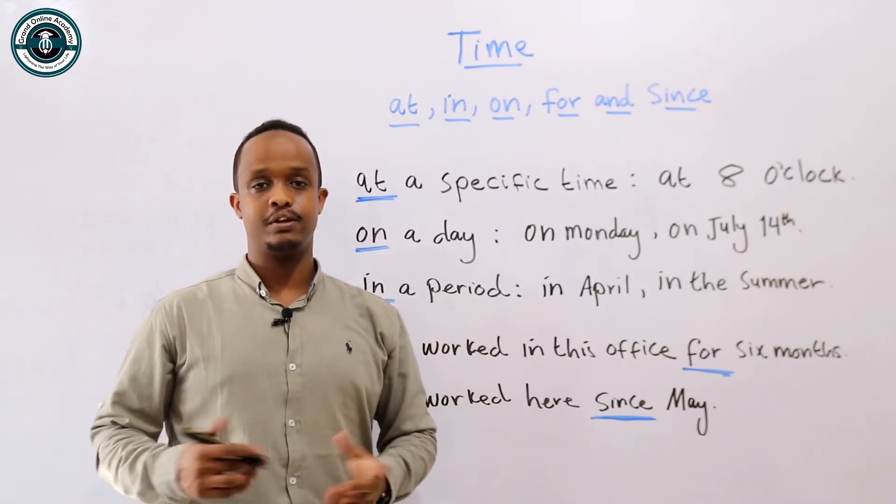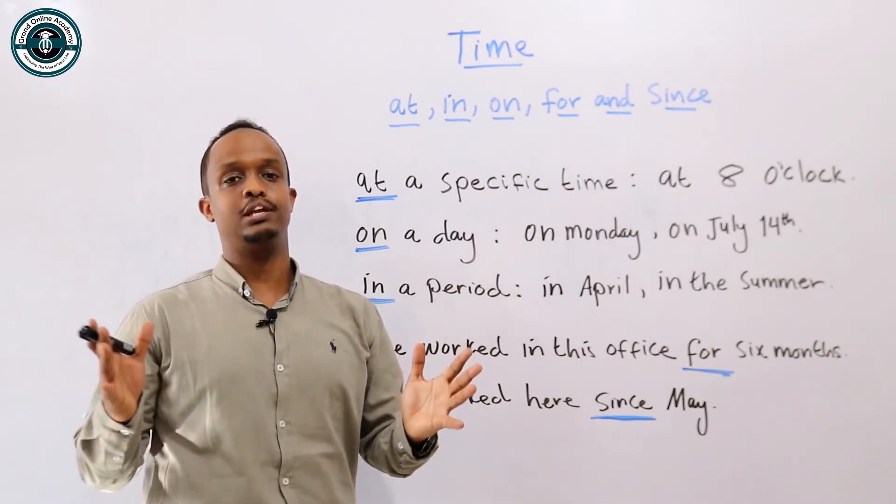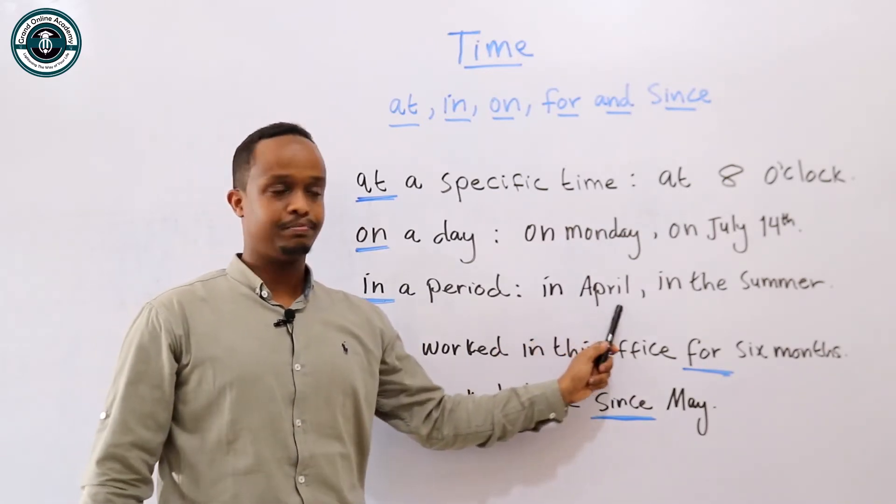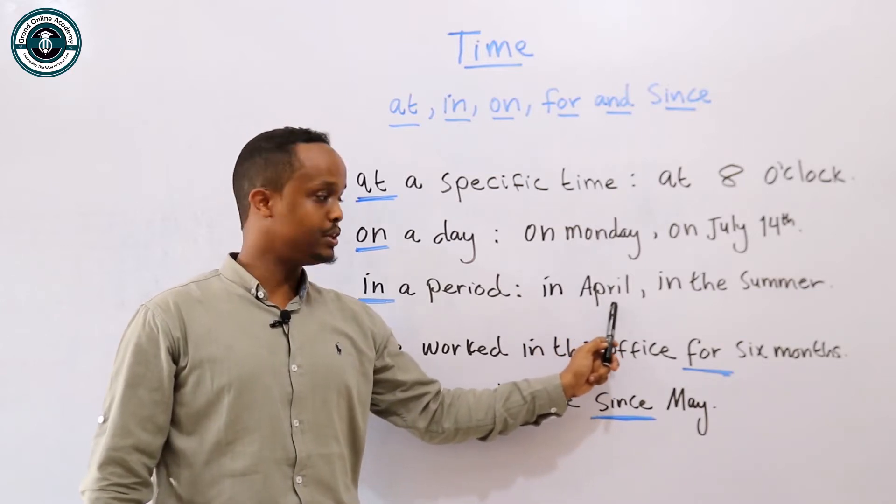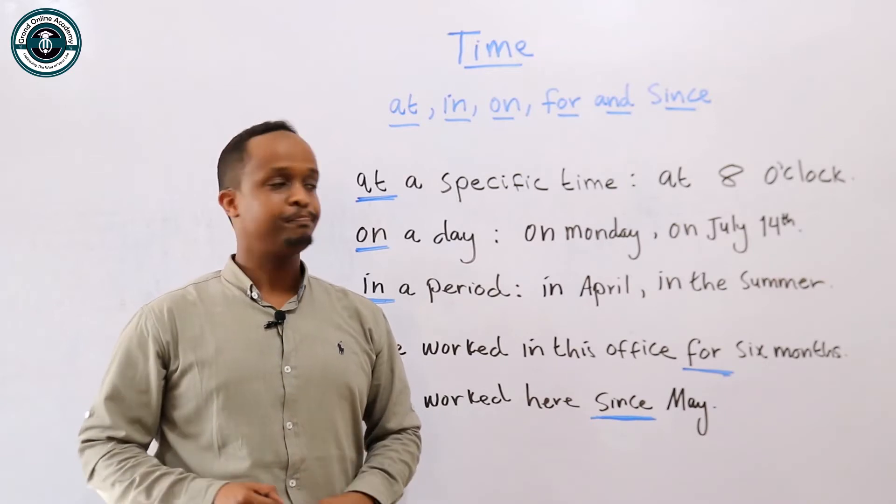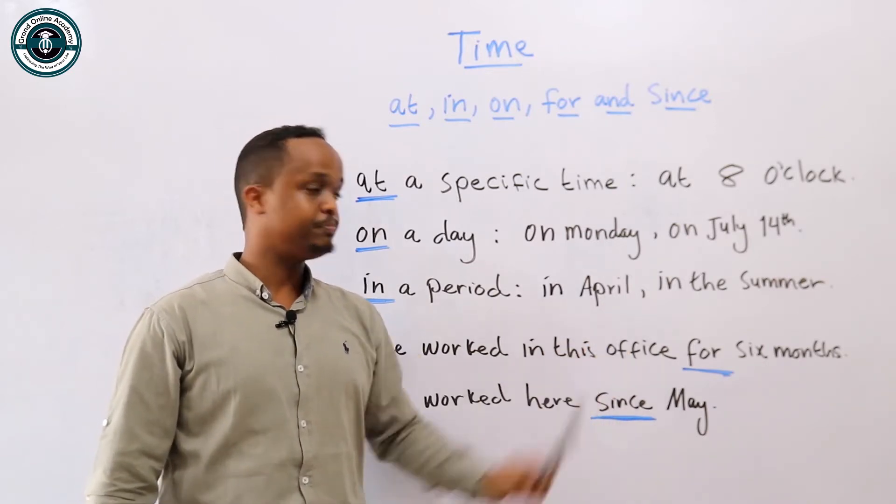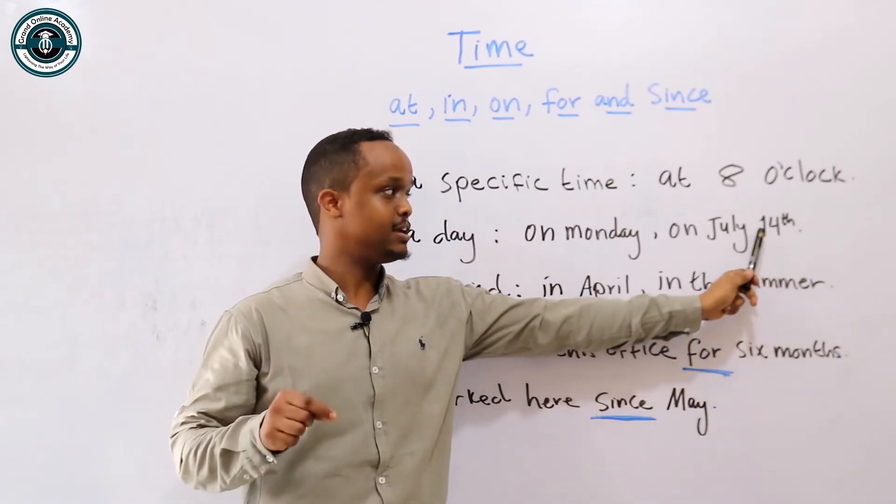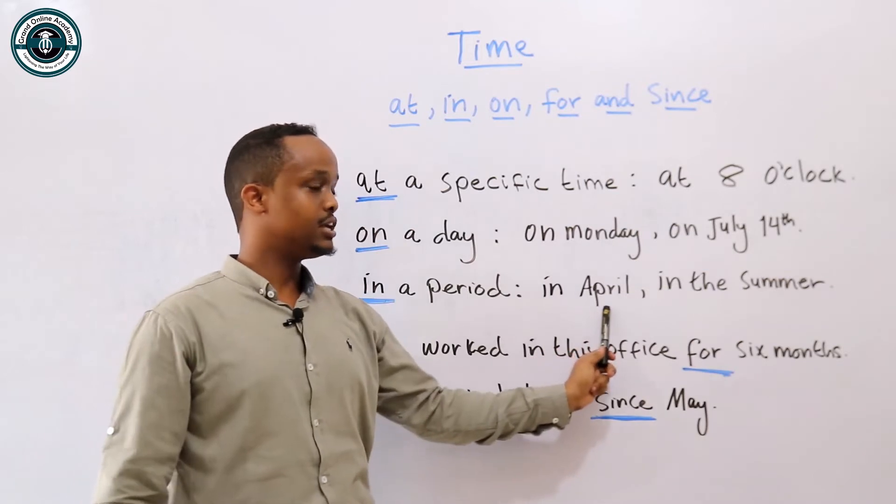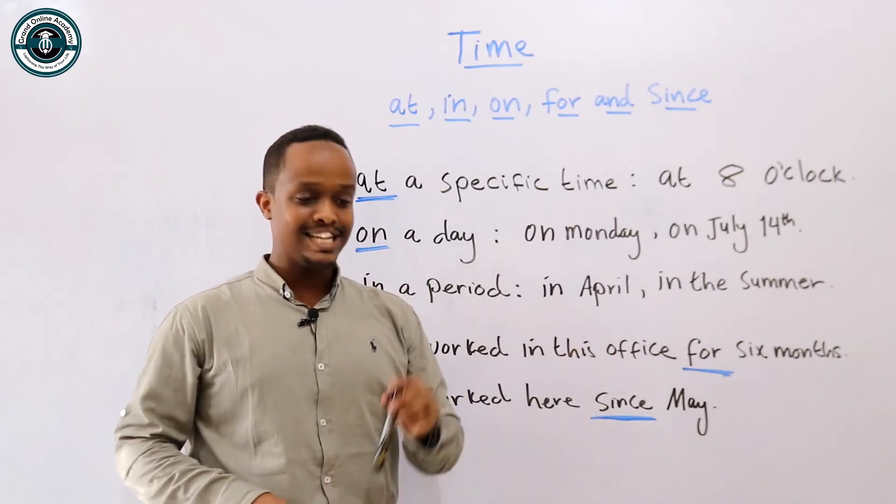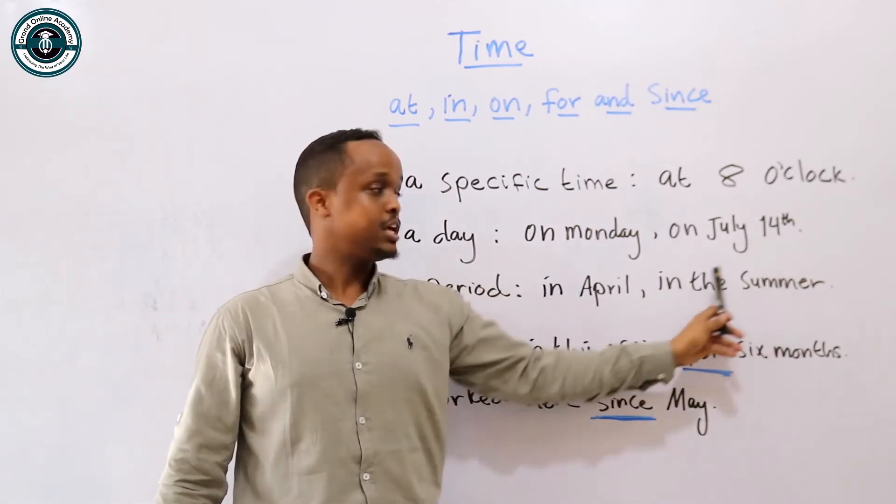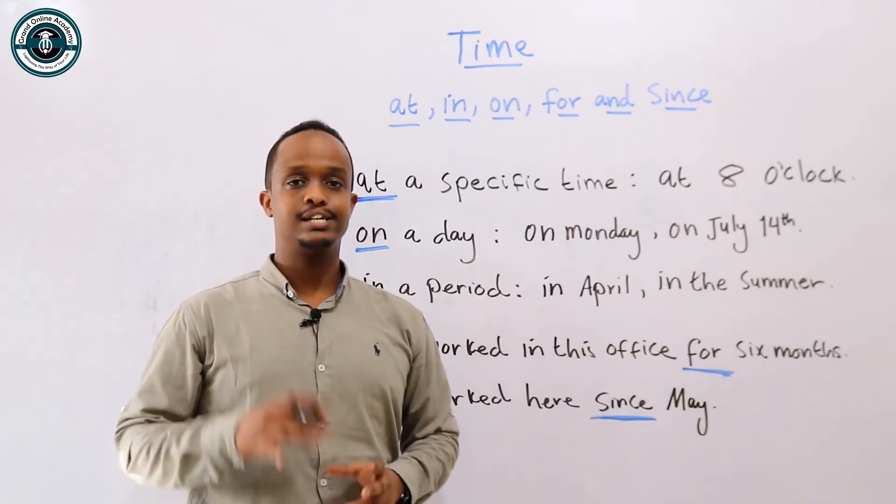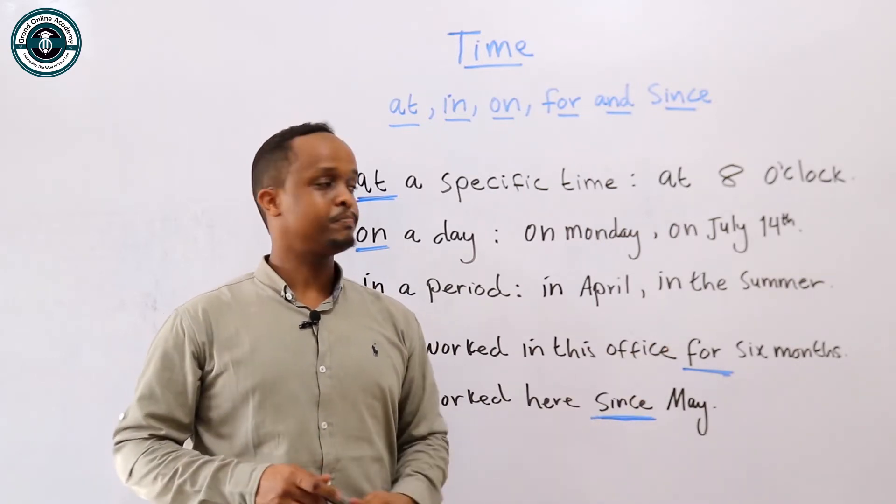In is used for a period of time. You can say in April. April is the fourth month of the year. This one is a specific day, but it's in April. In the summer - summer is one of the four seasons. It's a season. In winter, in autumn. Also you can use it for World War II. In the summer.